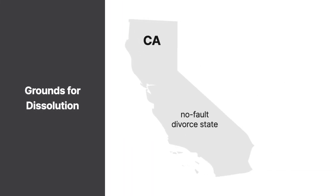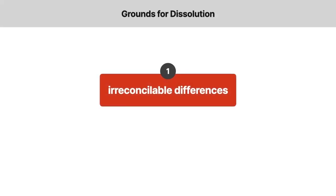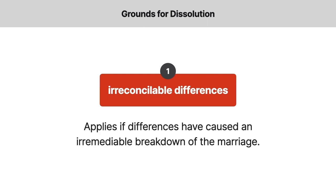California is a no-fault divorce state. Consequently, in a dissolution proceeding, evidence of misconduct by either spouse is generally inadmissible. There are only two recognized grounds for dissolution. The first and most common ground is irreconcilable differences, meaning problems undermining the marital relationship. Courts will grant a divorce if differences have caused an irremediable breakdown of the marriage.